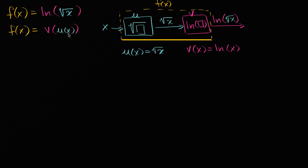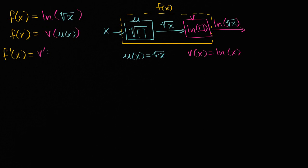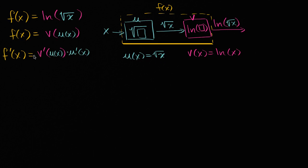It is a composition, which tells us that the chain rule is going to be very useful. The chain rule tells us that f'(x) = the derivative of the outside function with respect to the inside function — so it's v'(u(x)) — times the derivative of the inside function with respect to x, which is just u'(x).